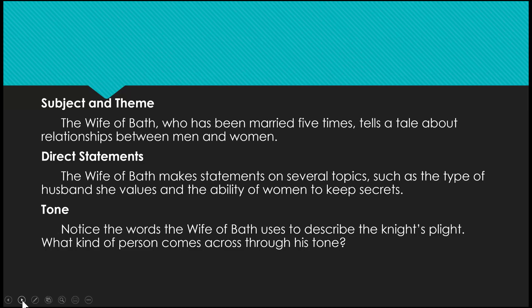In our story, for subject and theme, the Wife of Bath — who has been married five times — tells a story about relationships between men and women, so we'll look at what the message of her story is as we read it. In terms of direct statements, she makes statements on several topics, such as the type of husband she values and the ability of women to keep secrets. In terms of tone, notice the words the Wife of Bath uses to describe the knight's predicament — what kind of person comes across through her tone? Based on how she talks about the knight, how do you think she feels about him?